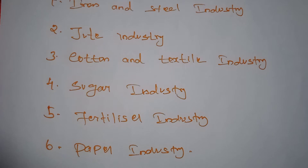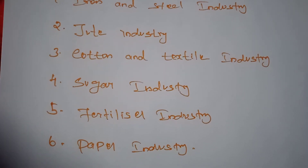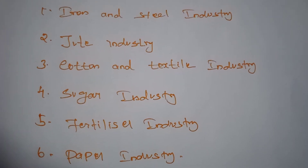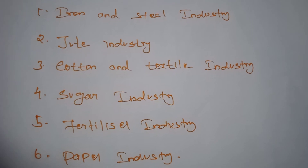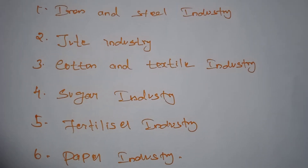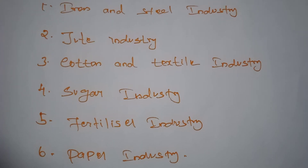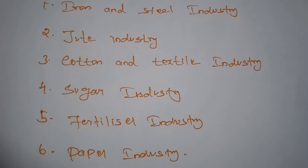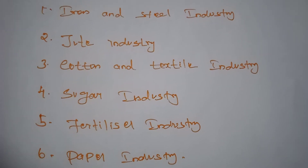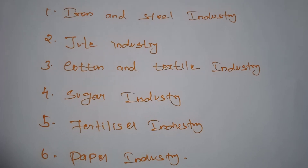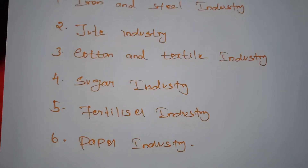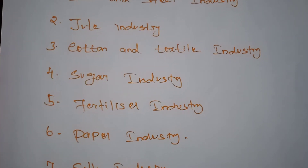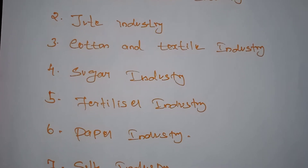Next is the sugar industry, which is the second largest industry among agricultural-based industries in India. Sugar industries provide employment opportunities for both agricultural and industrial sectors. India is now the largest producer and consumer of sugar in the world, and Maharashtra alone contributes over one-third of India's total sugar output. India is also the third largest producer of nitrogenous fertilizers.